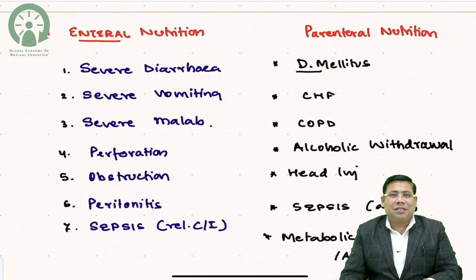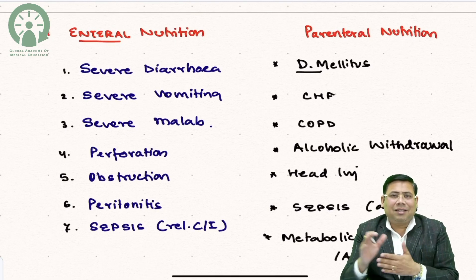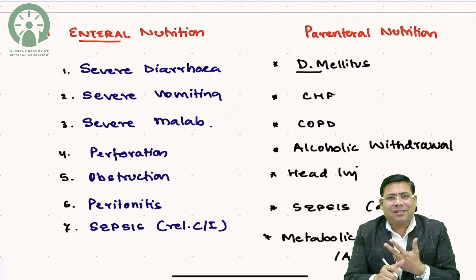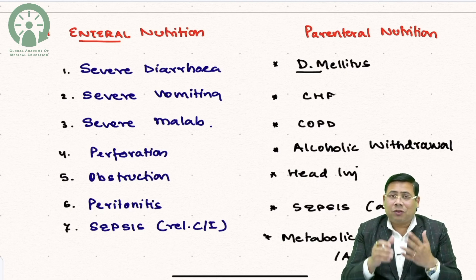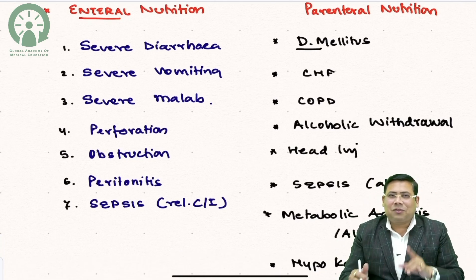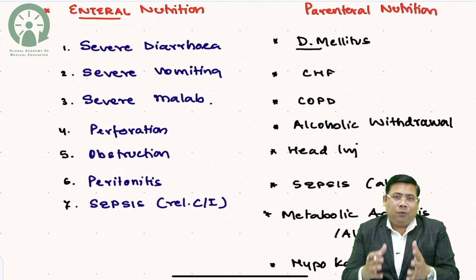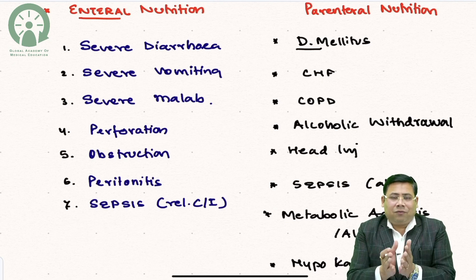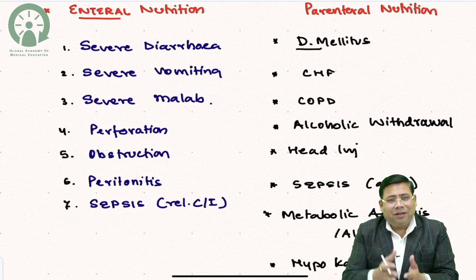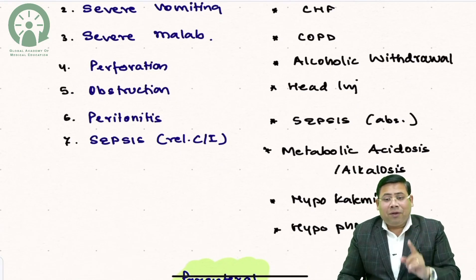Contraindications for parenteral nutrition: since we give a high carbohydrate load, hyperglycemia and pre-existing diabetes mellitus are contraindications. COPD is a contraindication because carbohydrate breakdown produces CO2, which raises pCO2 levels. Congestive heart failure is a contraindication because the increased osmolarity draws water from the extravascular into the intravascular space, precipitating heart failure.